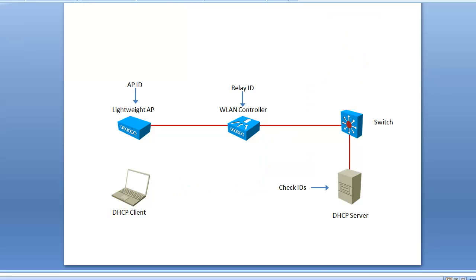With DHCP option 82, your access point or controller — anything relaying the DHCP request from your client — will have an identifier. The access point has an ID and the controller itself has an ID. On the DHCP server you configure option 82 to check these IDs: if the client doesn't provide the right ID with its request, the server ignores the request and does not provide an IP address. It's also useful beyond security — for example, you can identify requests coming from wireless clients via the controller relay ID and provide a specific gateway for those clients versus a different gateway for wired clients.